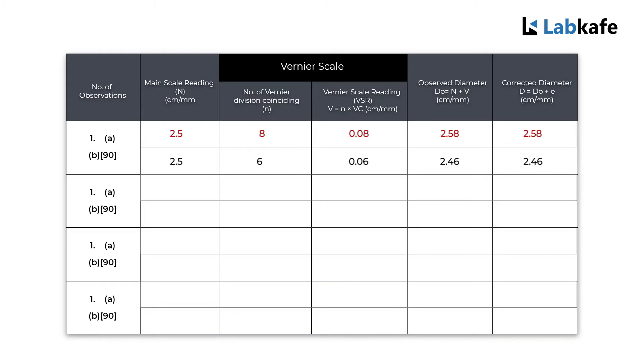Now repeat the same steps and collect 3 to 4 more data points in the table. Finally, apply the zero corrections and get the mean of the diameter.